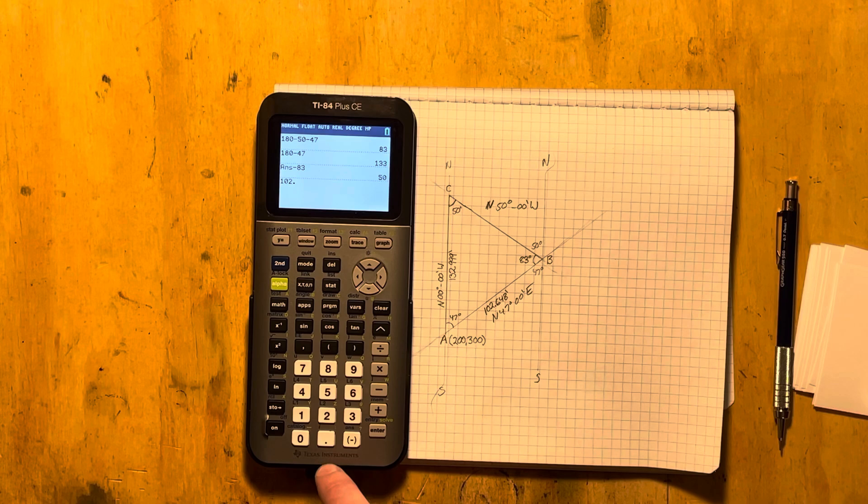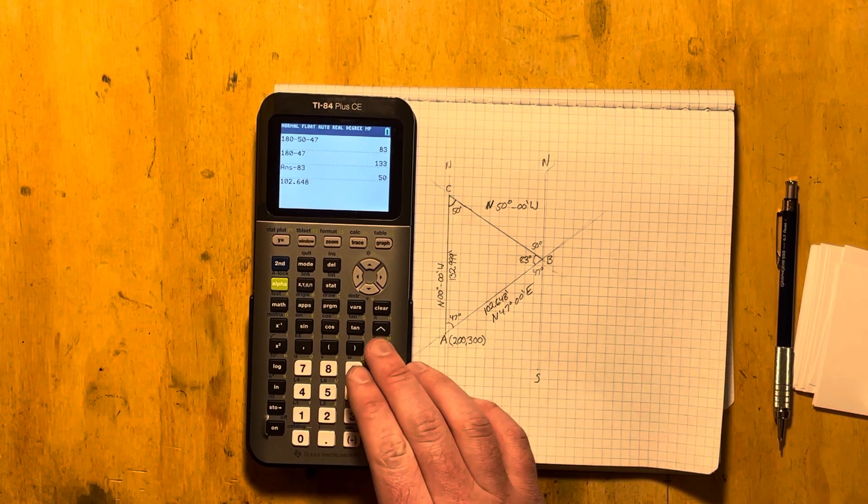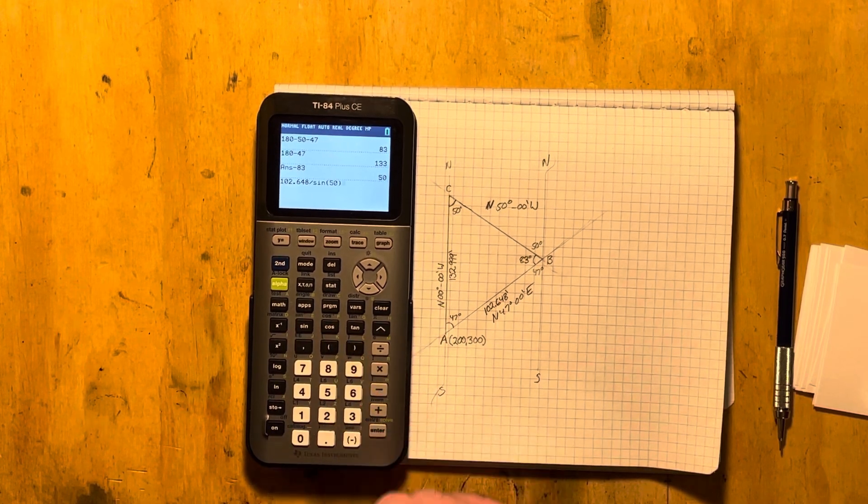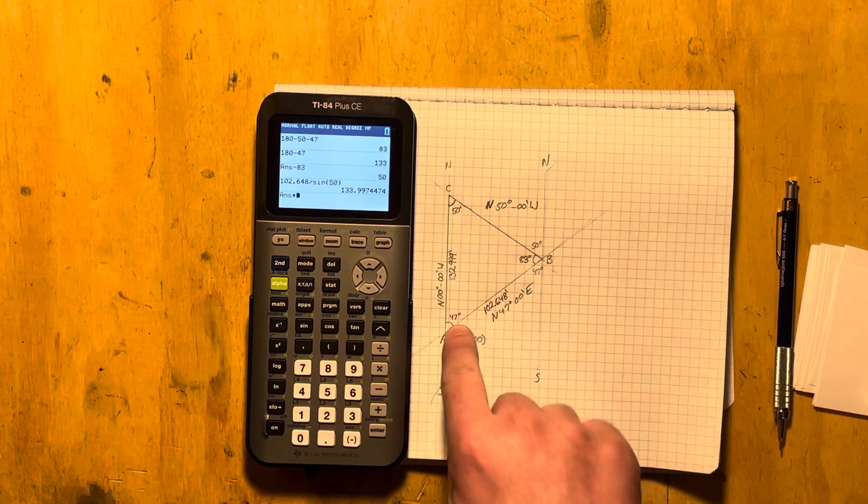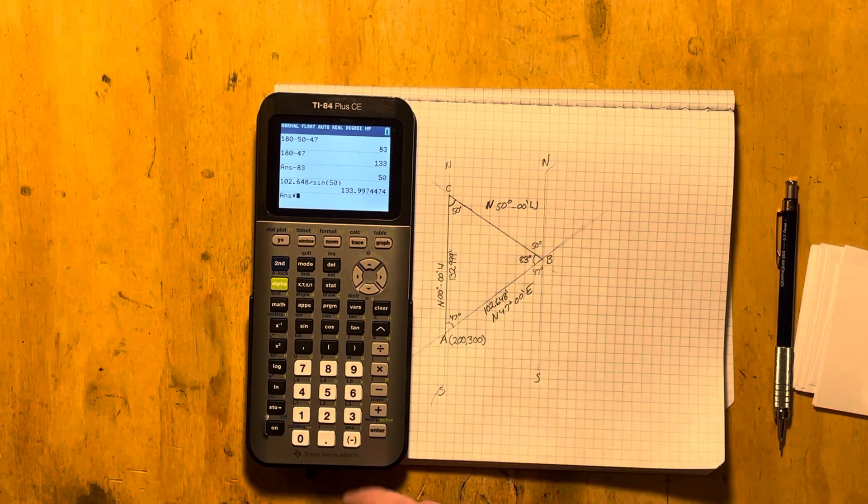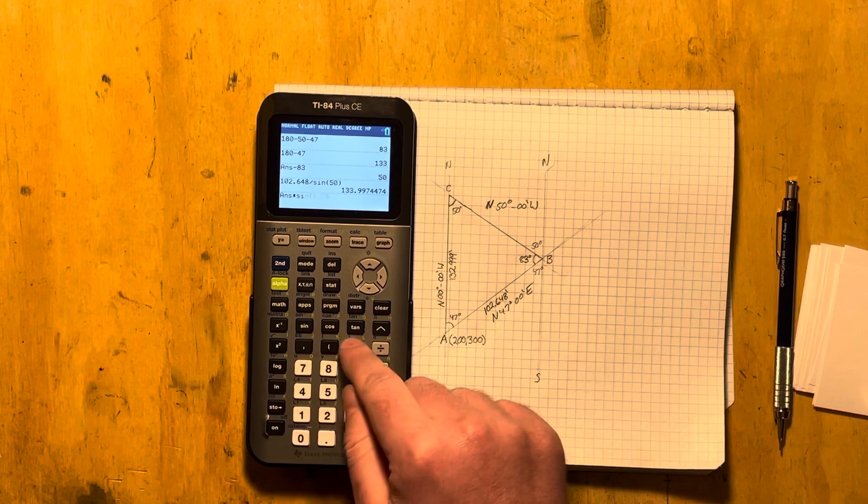So 102.648 feet divided by sine 50, multiply by sine 47 because we want the opposite side length.